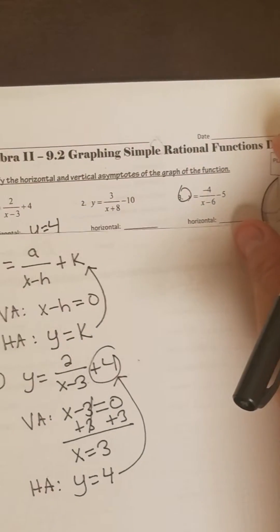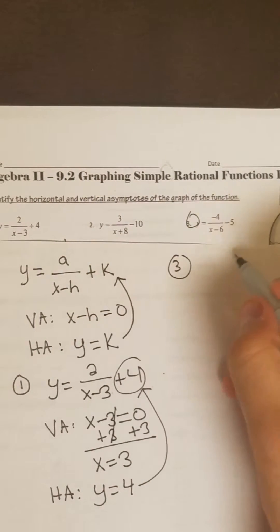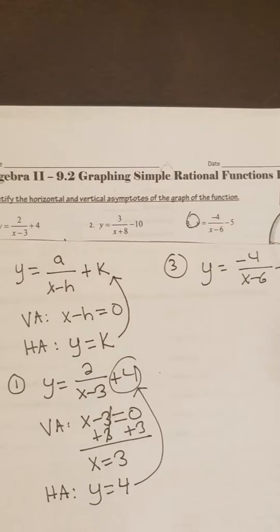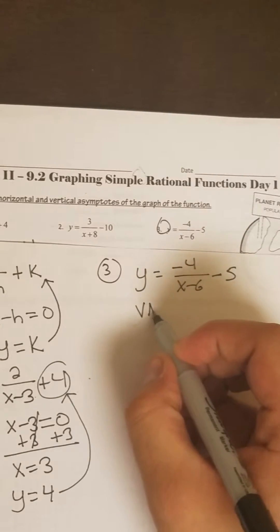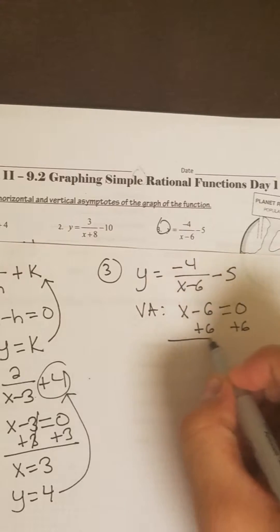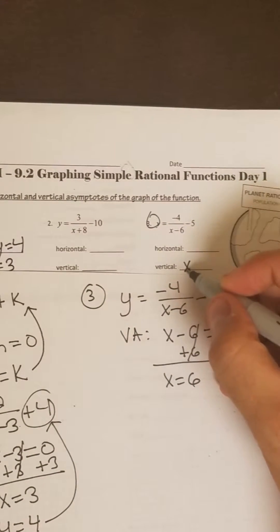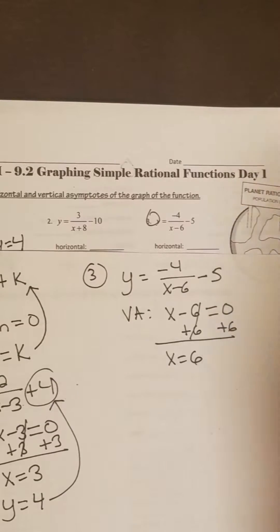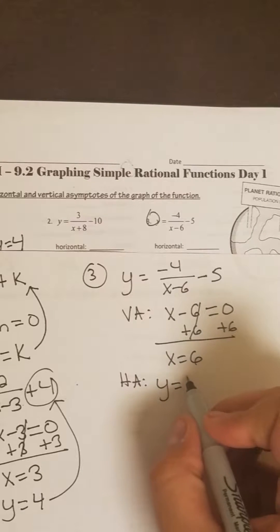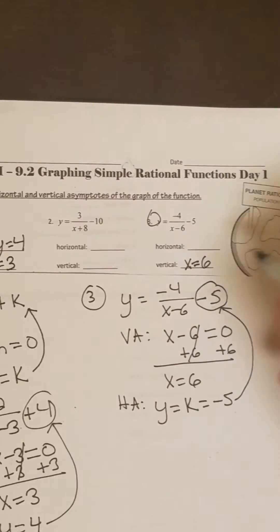Let's do another example. Let's look at example number 3. So we got y equals negative 4 over x minus 6 minus 5. For this example, we're going to set the denominator to 0 for the vertical asymptote. Move the 6 over, so x equals 6 — that's our vertical. For our horizontal, set y equal to our k value, which in this case is negative 5. So that is our horizontal.